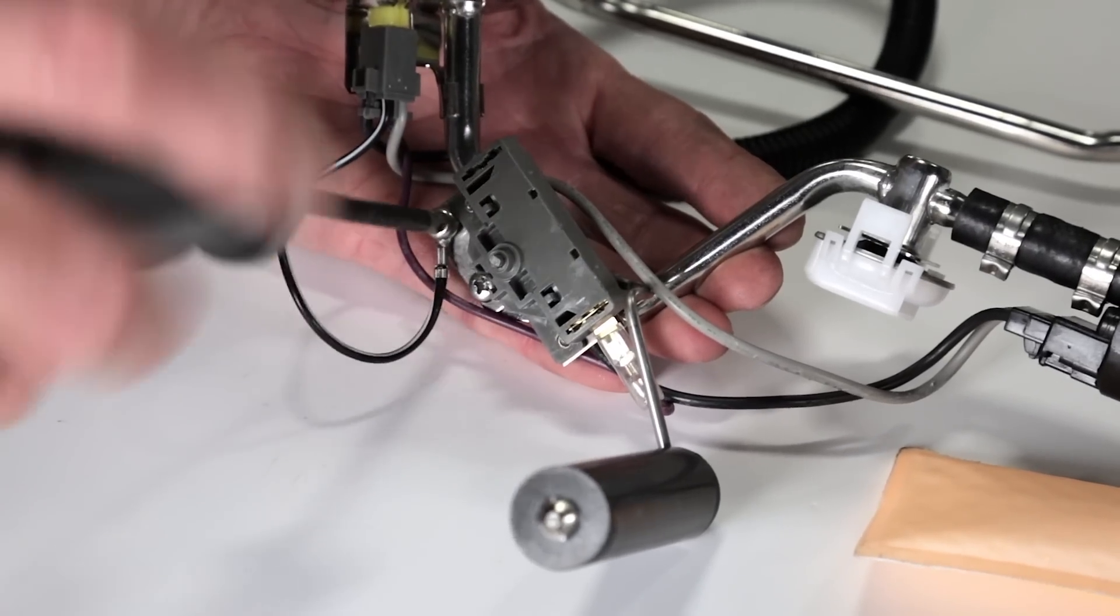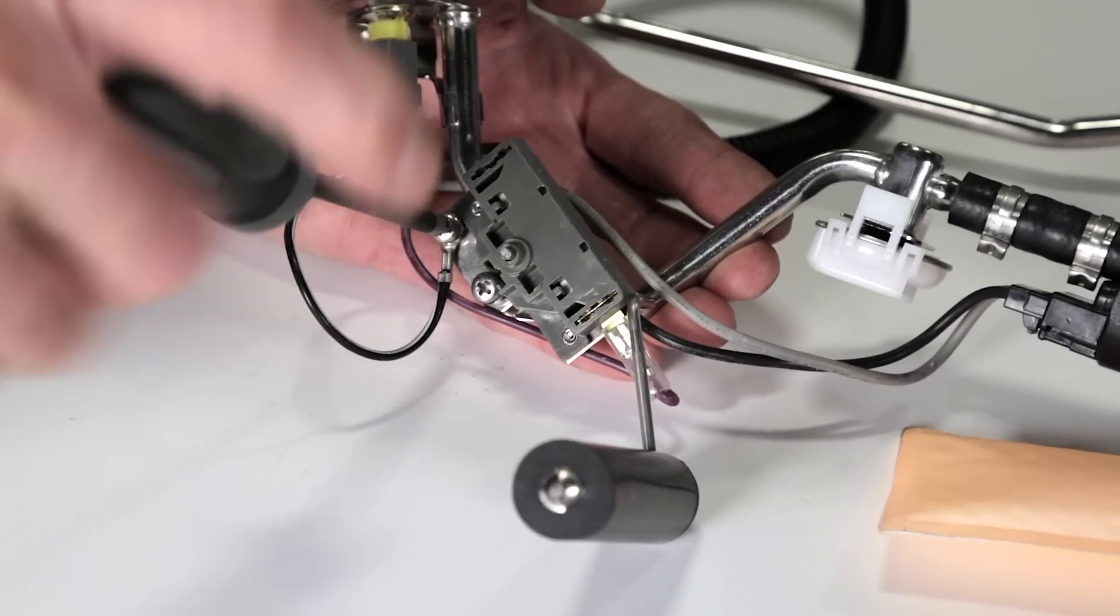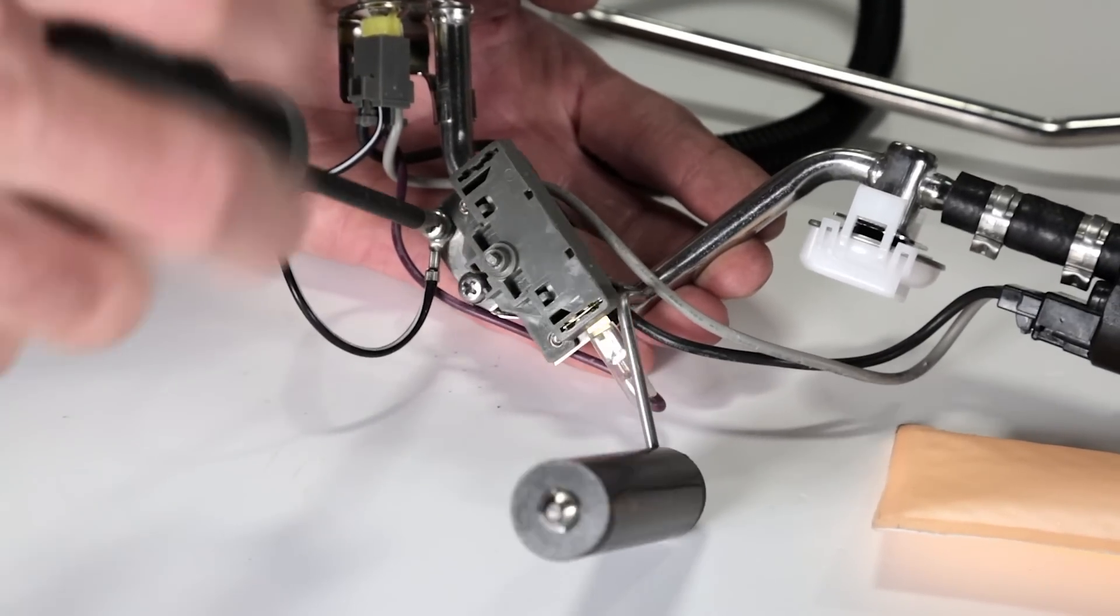Loosen the two screws that are holding the fuel level sender to the pump assembly and remove it. The screws are captured on the fuel sender bracket so we don't accidentally drop them in the fuel tank.